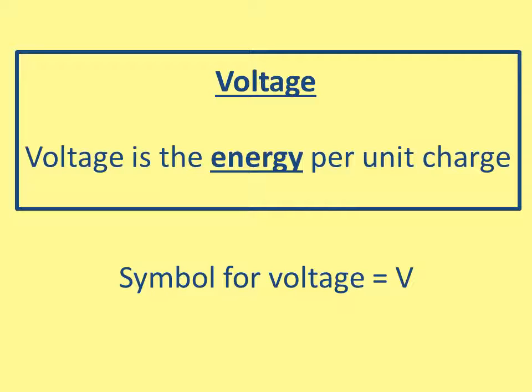Voltage is the energy per unit charge. The unit charges are the electrons that move around the metal, and the amount of energy they have is your voltage. Electrons will not move within the metal by themselves — you need to give them energy, and that's what batteries do. The battery gives the electrons energy so they can flow around. When they travel through a component like a light bulb or speaker, they lose some energy and then continue around the circuit.